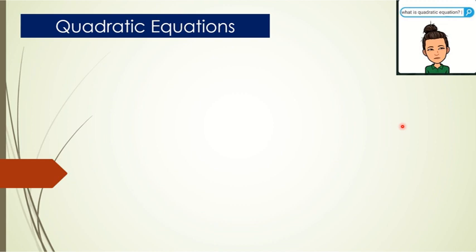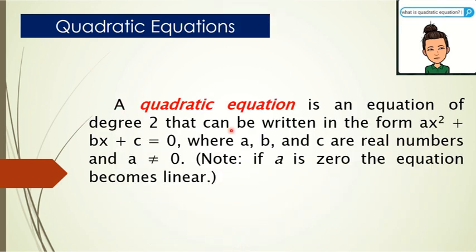I think you are now ready to learn about quadratic equations. So, what is a quadratic equation? A quadratic equation is an equation of degree 2 that can be written in the form ax squared plus bx plus c equals 0, where a, b, and c are real numbers and a is not equal to 0. Quadratic equations are second-degree equations, meaning the highest exponent must be 2. Why can a not equal 0? It is because if a is equal to 0, the equation becomes linear.